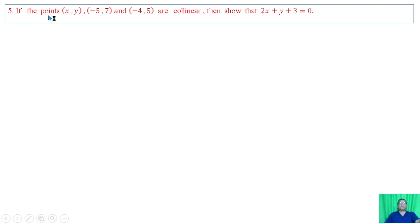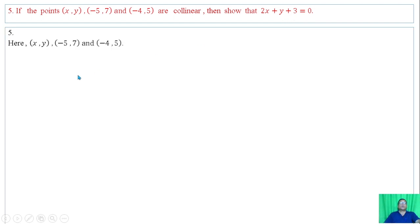Question 5: If the given points are collinear, then show that 2x plus y plus 3 equals zero. Since these three points are collinear, the area of the triangle is zero. Using the formula for finding area of triangle when three vertices are given, we have the result. Simplifying, we get the desired result.